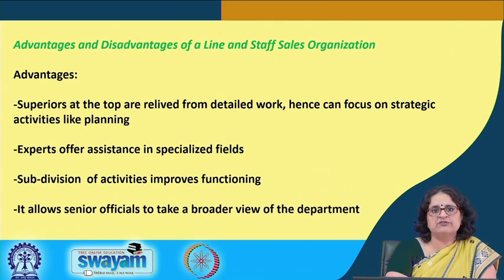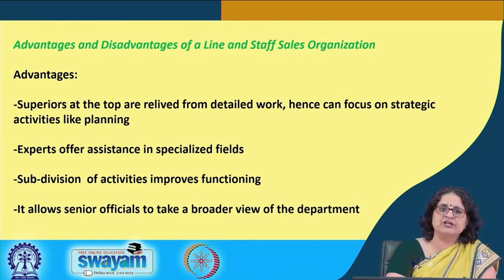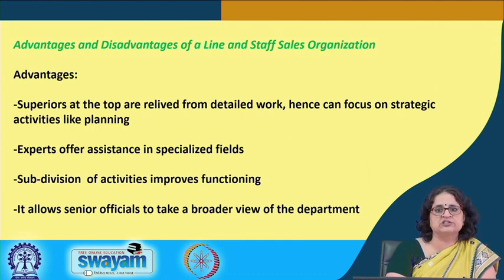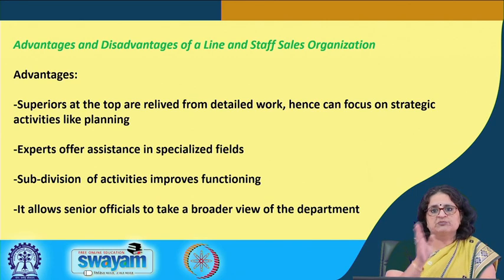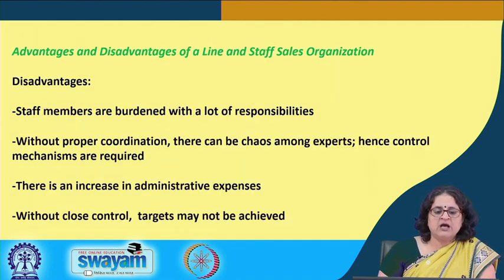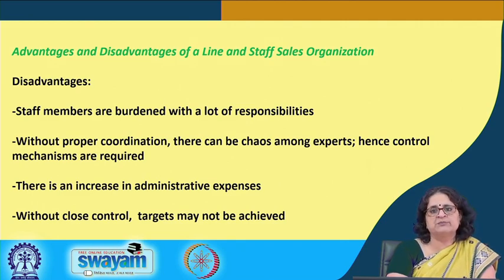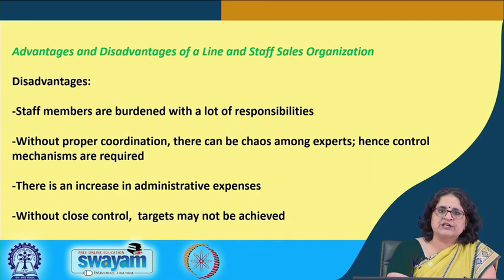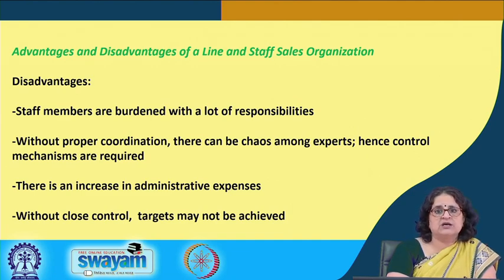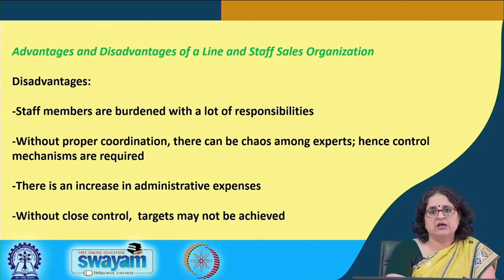The advantages of the line and staff organization are: superiors are relieved of detailed work and can focus more on strategic planning; experts in the form of staff provide assistance to field people working in the sales function; subdivision of activities into specialized verticals can improve function; and it allows senior management to take a broader overview of the department. However, disadvantages are: staff members are burdened with a lot of responsibility, people from divisions and branches often contact them for help, administrative expenses are huge, and without close control a target may not be achieved. Without proper coordination, there may be chaos at the specialist level, so strong control mechanisms are required.